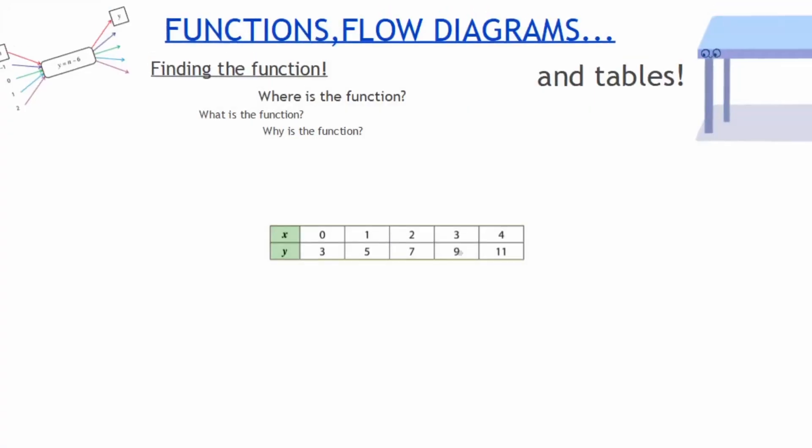In completing these tables and flow diagrams, we have needed the rule or what we call the function every single time. But it happens sometimes that we are not given the function but we are given the information. So it is important for us to be able to use things going left but also going to the right. Working backwards is just as important.